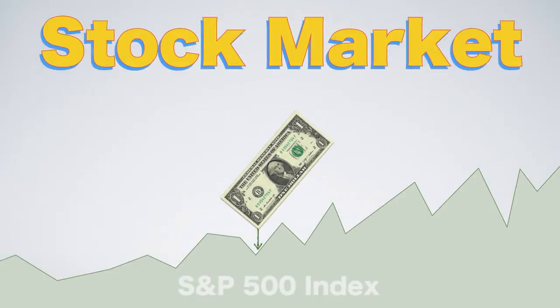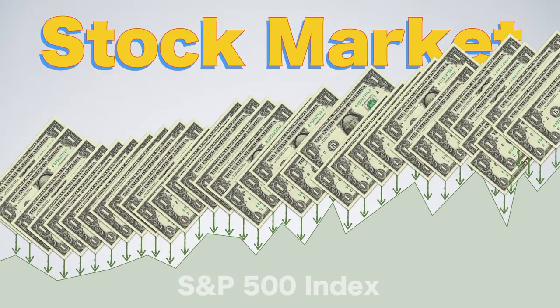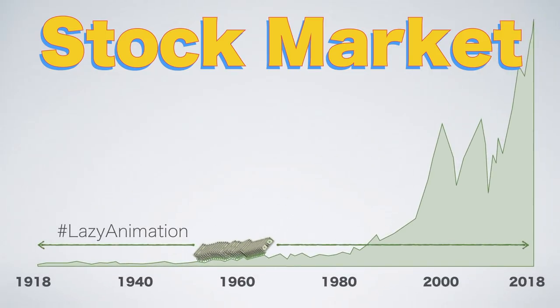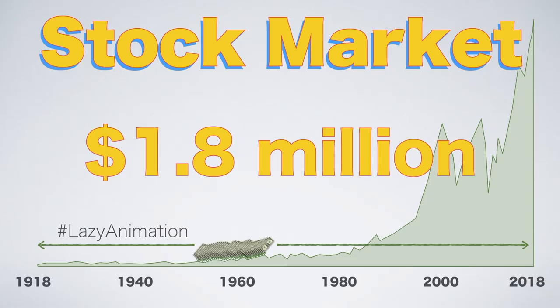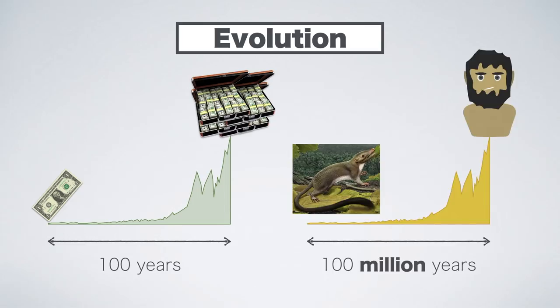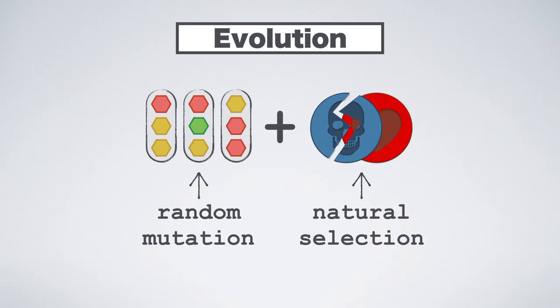Consistent slight advantages compounded over a long timeline can produce huge advantages in the end. It's like consistently investing one dollar into the stock market each month — it might seem like a completely insignificant saving month over month. But if your family had done so since 1918, then in 2018 those savings would be worth around 1.8 million dollars. Instead of 100 years in the stock market, our gene pool has had millions of years of random mutation and selection. Through those two mechanisms, Darwinian evolution has consistently compounded advantages and got us where we are today.